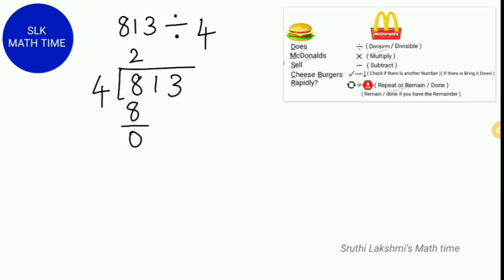Next, we check if there is another number — there is — so we bring down 1. How many 4s can fit in 1? Zero. So we write a 0, then do 4 times 0, which is 0. Then 1 minus 0 gives us 1.